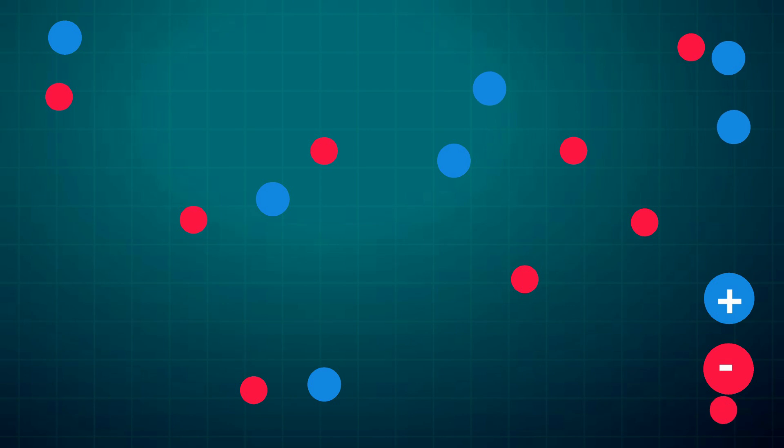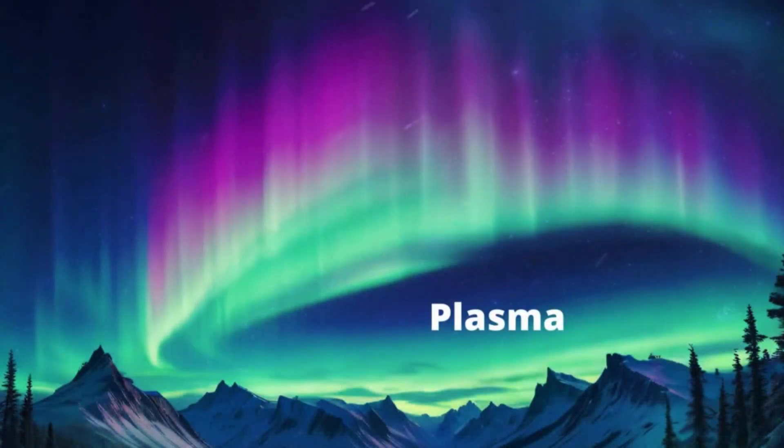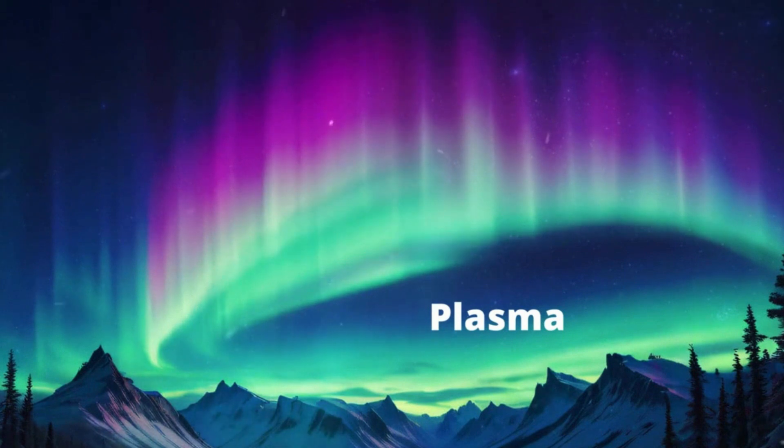You now have this fourth state of matter called plasma. Plasma, this ionized gas, has a neutral charge due to the fact there is an equal amount of positively and negatively charged particles.